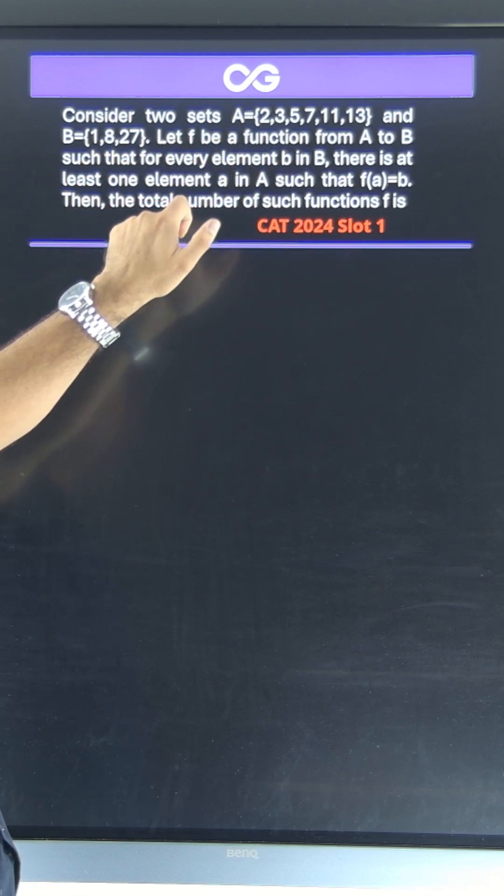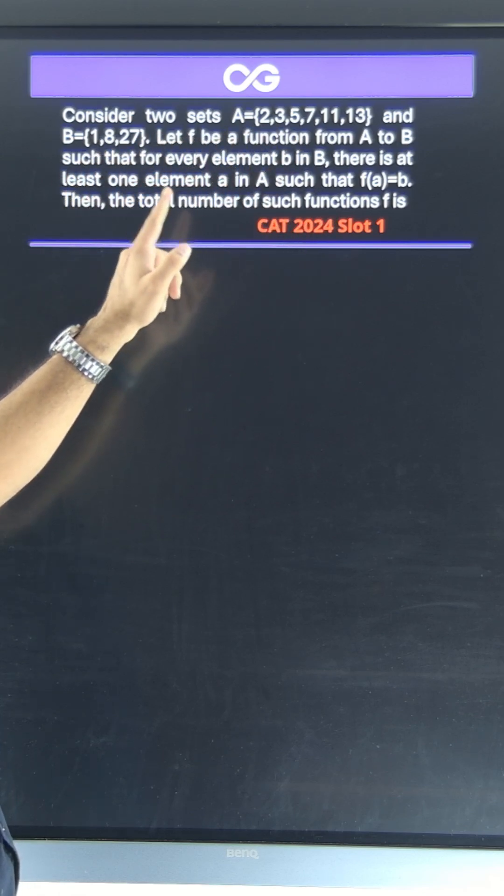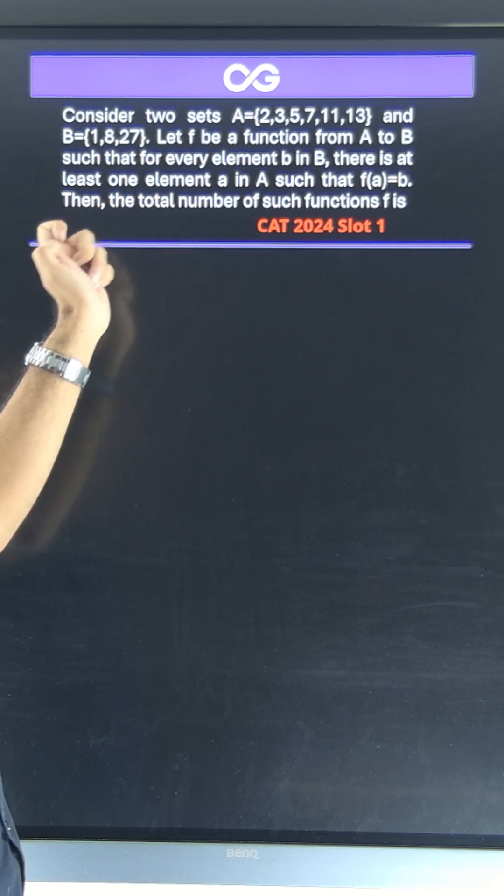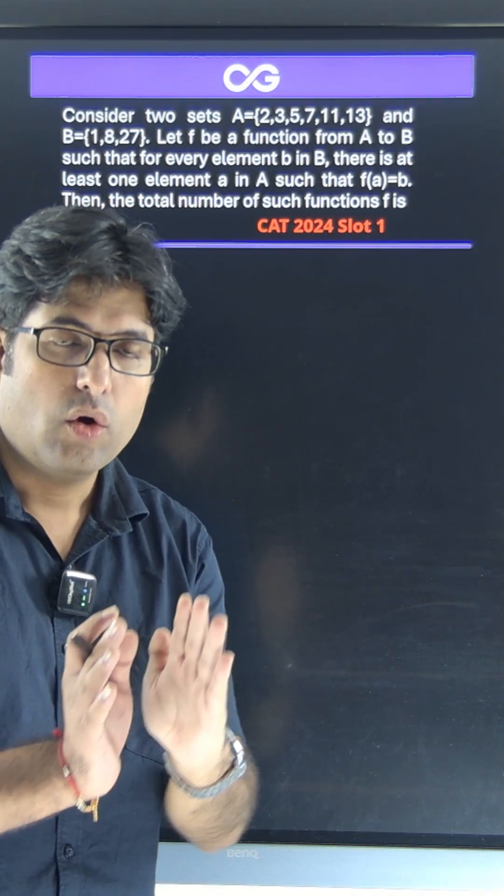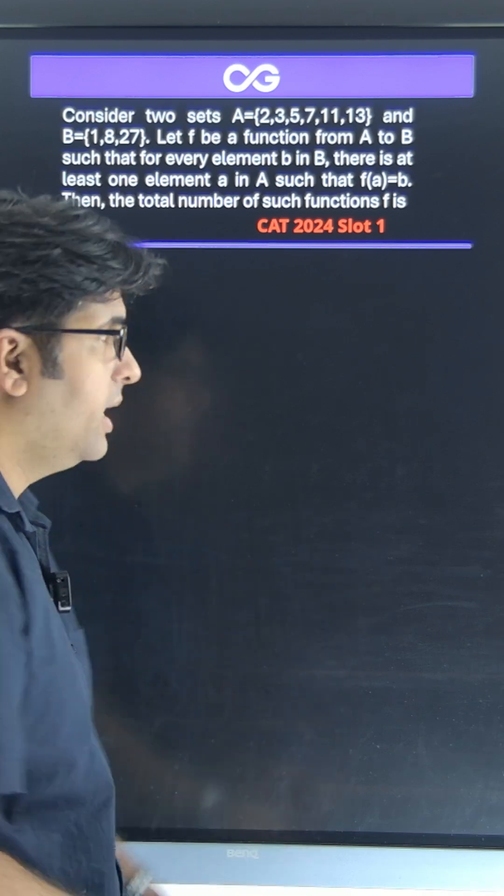We are asked for functions from A to B such that for every element b in B, there is at least one element a in A such that f(a) equals b. This is the standard definition of an onto function. Onto functions ka direct formula hai, let's apply that.